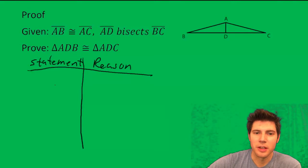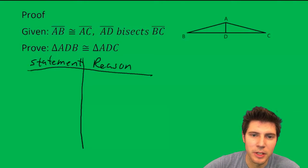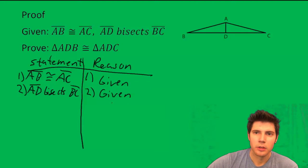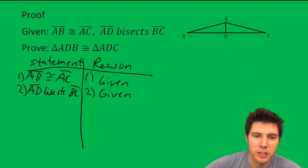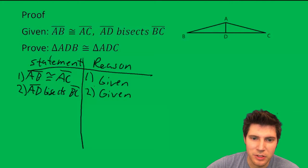So I put up statement and reason. The first statement I like to make is the given. So I wrote down what was given. AB is congruent to AC. That's given. And AD bisects BC. That's given.